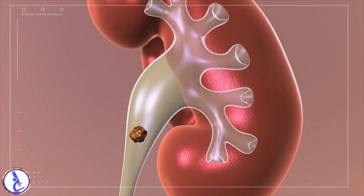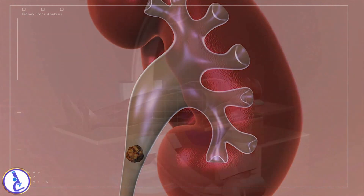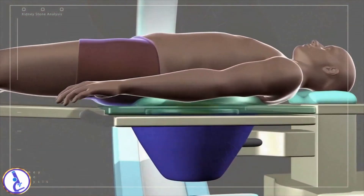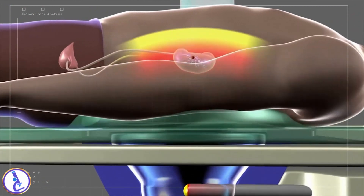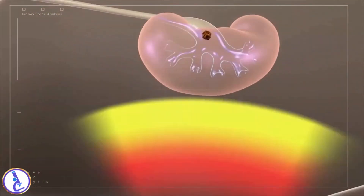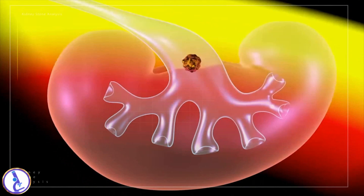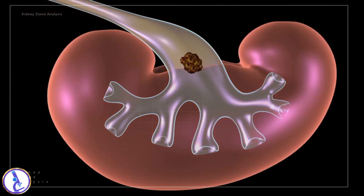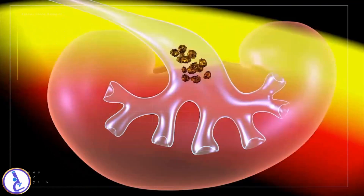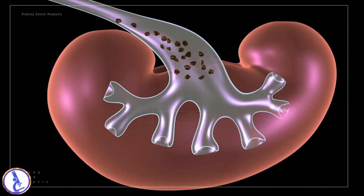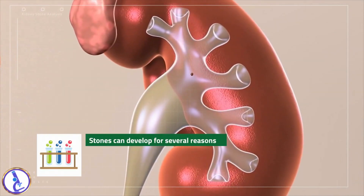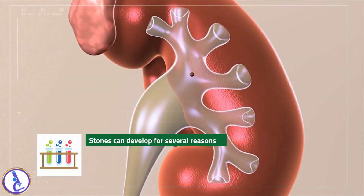Many stones will eventually pass out of the body in the urine, but some are too large or have too irregular a shape for the body to expel. These may need to be surgically removed or pulverized in place using targeted shock waves; the smaller particles and fragments that remain can then pass through the urinary tract.